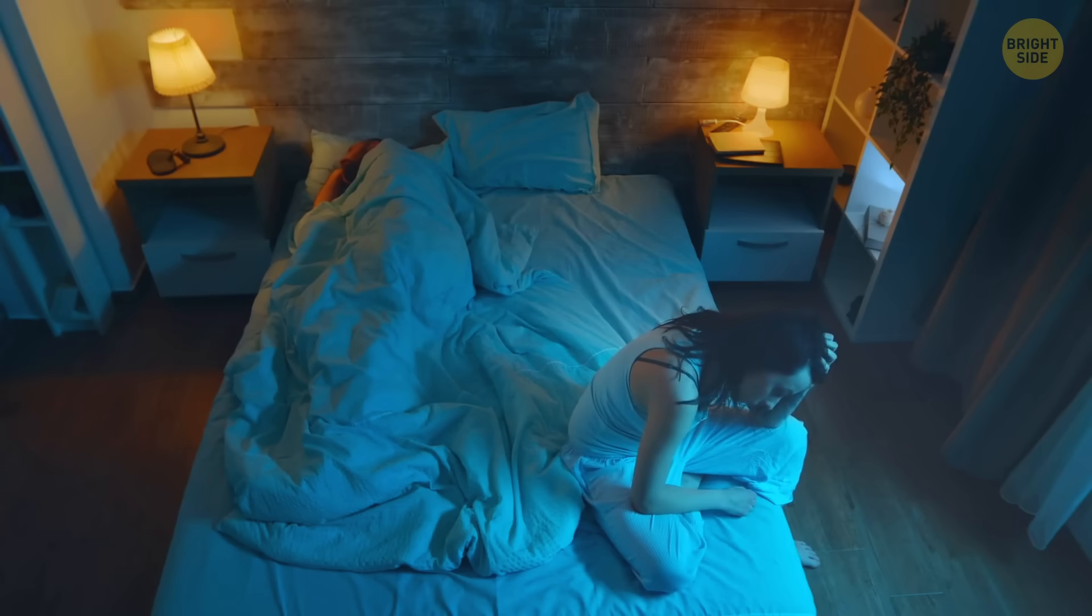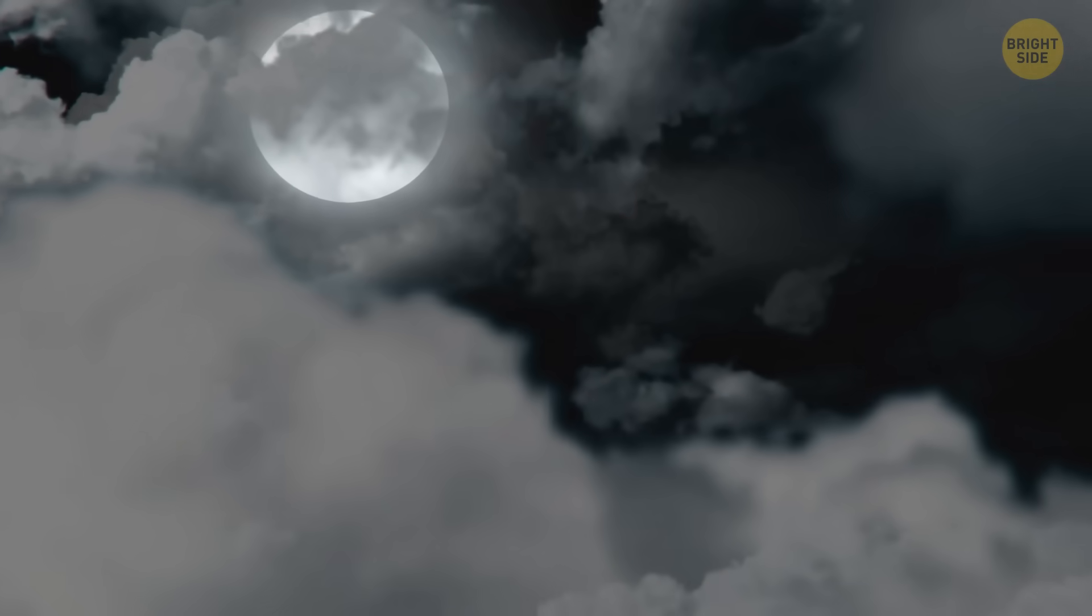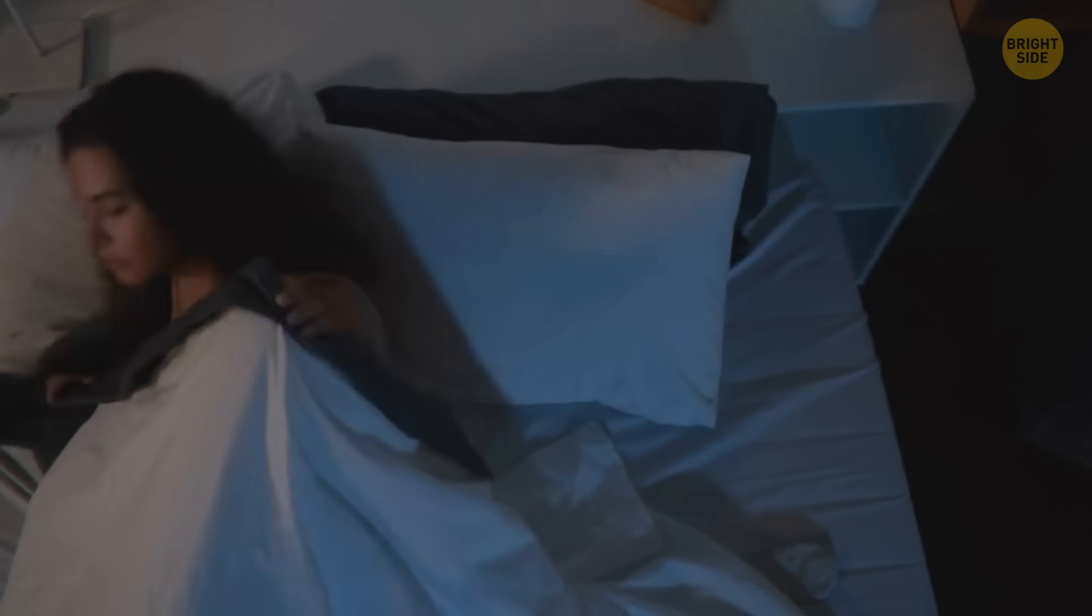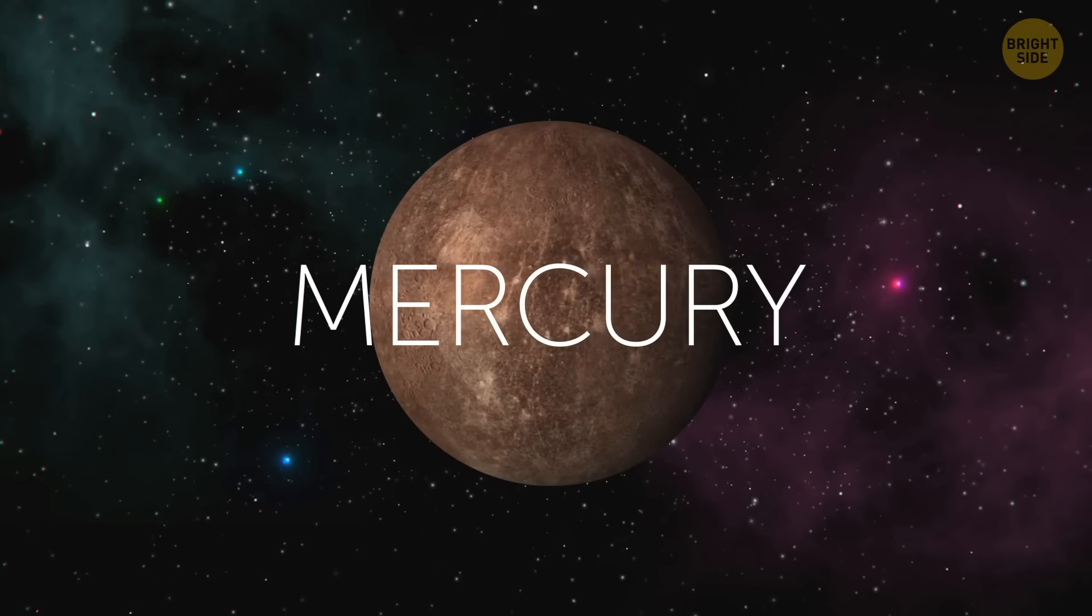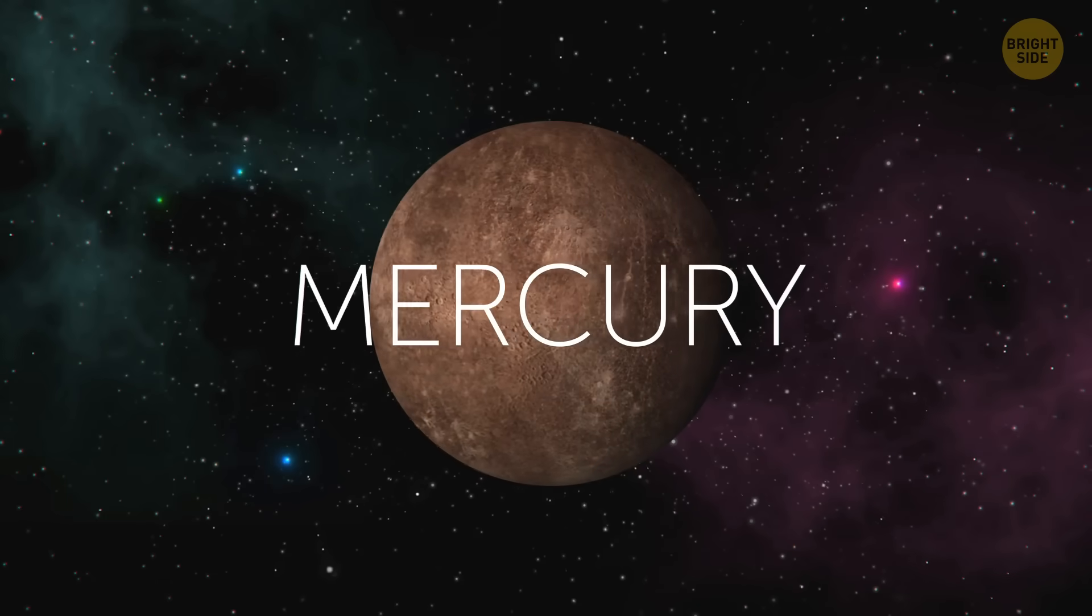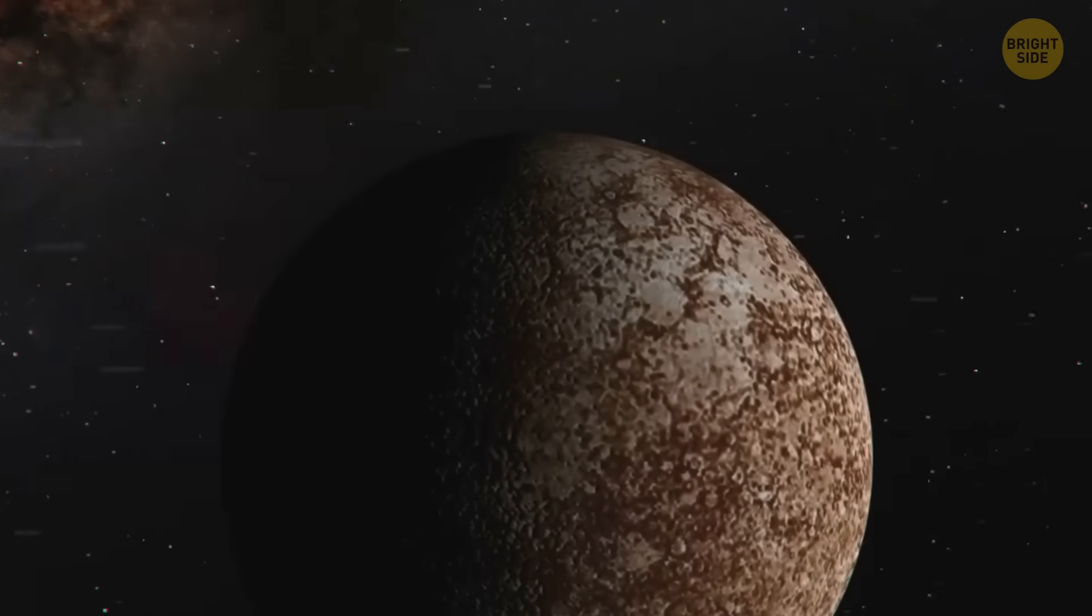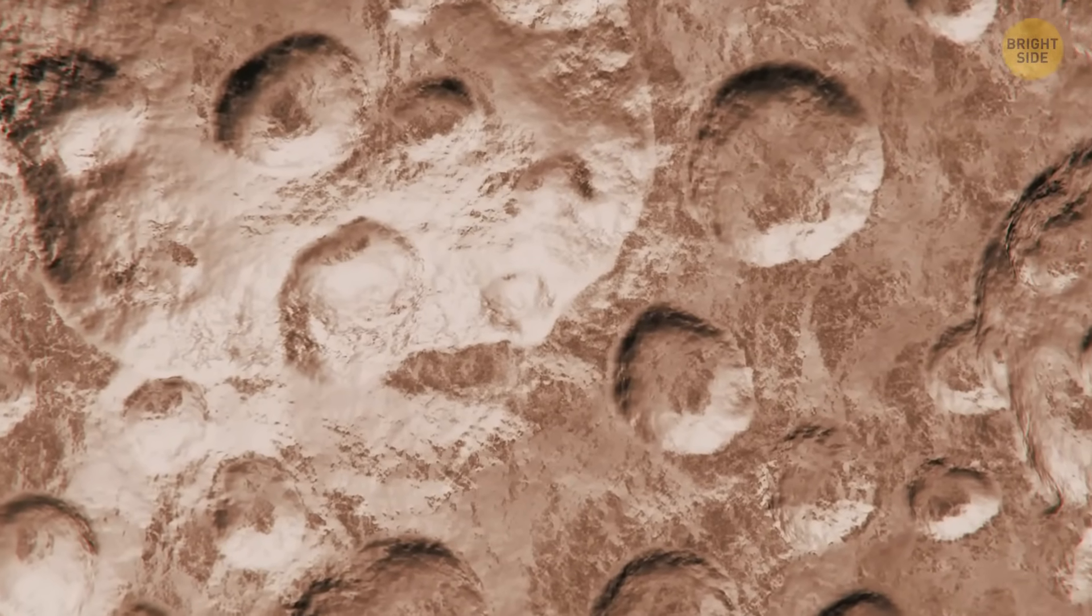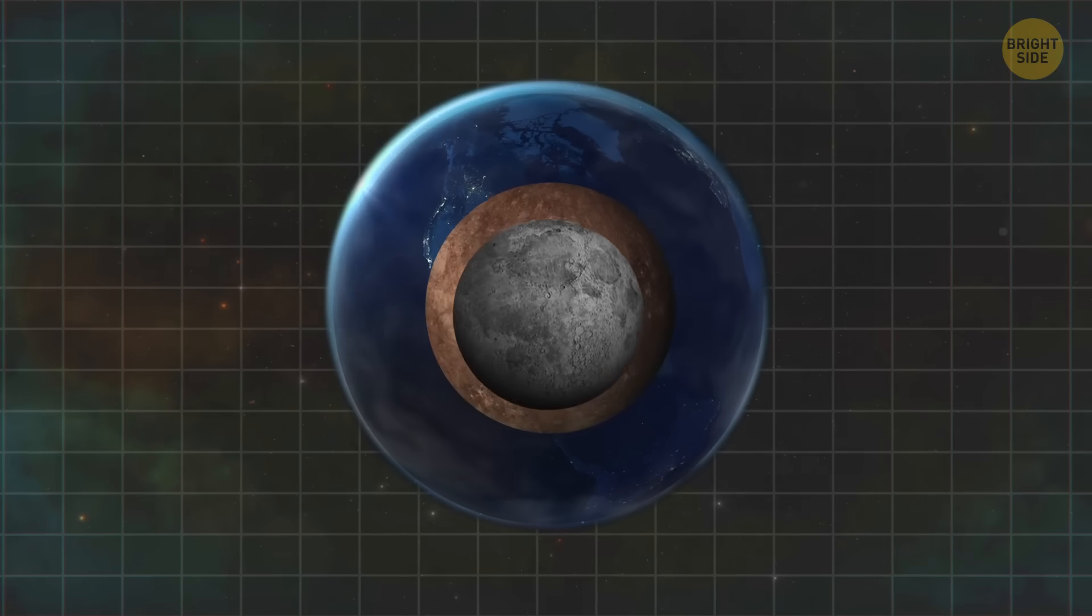But imagine waking up at night and noticing that the Moon looks somewhat different than usual. It seems brighter and bigger. It's hardly noticeable, especially when you're half-asleep. You go back to bed, unaware that instead of the Moon, you've just seen Mercury. Close up, this planet, the nearest to the Sun, is similar to our natural satellite. Its surface is littered with craters left by space rocks. Mercury is about two-fifths the size of our planet, but it's still a bit larger than the Moon.